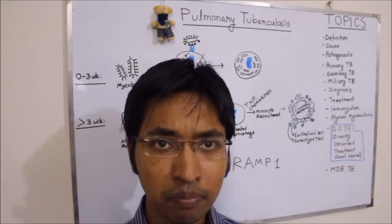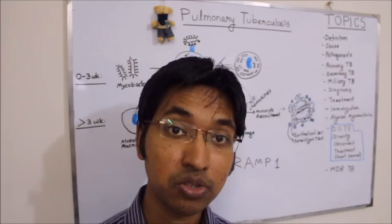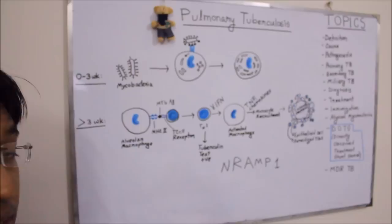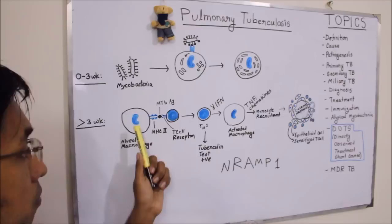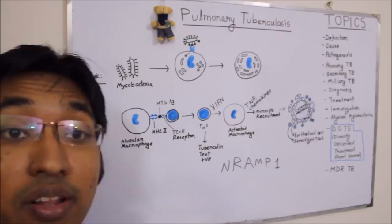Moving back to the pathogenesis: we have already talked about what happens in the first three weeks. After three weeks, cell-mediated immunity begins. On the board you can see the alveolar macrophage that was infected by mycobacterium tuberculosis, and now that macrophage is presenting via MHC class 2 molecule — presenting mycobacterial antigen to the T cell.